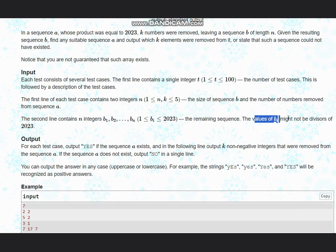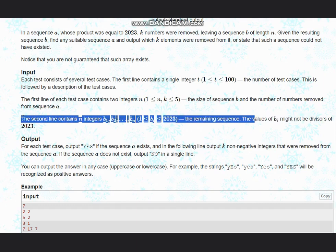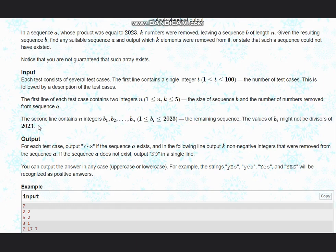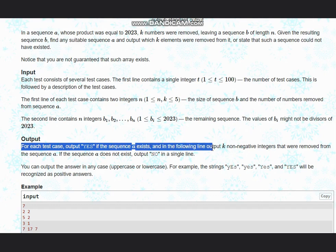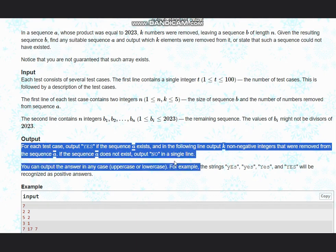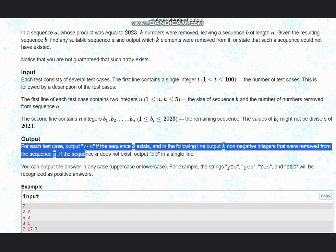The values of bi might not be divisors of 2023. For each case we need to output YES if sequence a exists, and in the following line output k non-negative integers that were removed from sequence a. If sequence a does not exist, we output NO.